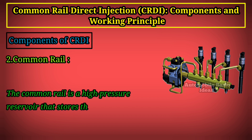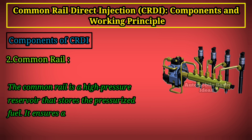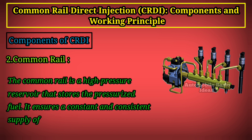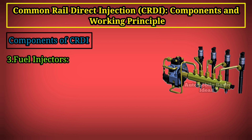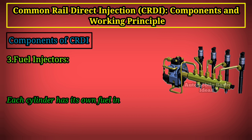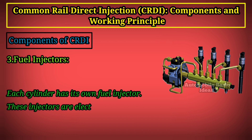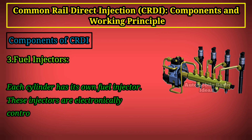Component 2 — Common Rail: the common rail is a high-pressure reservoir that stores the pressurized fuel. It ensures a constant and consistent supply of fuel to all the injectors, irrespective of engine speed or load.